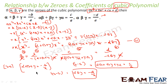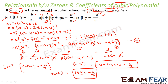And comparing equations 3 and 6, we get alpha·beta·gamma = −d/a. So we have three equations: alpha + beta + gamma = −b/a; alpha·beta + beta·gamma + gamma·alpha = c/a; and alpha·beta·gamma = −d/a. This is the relationship between the zeros and coefficients of the cubic polynomial, where alpha, beta, gamma are the zeros and a, b, c, d are the coefficients.